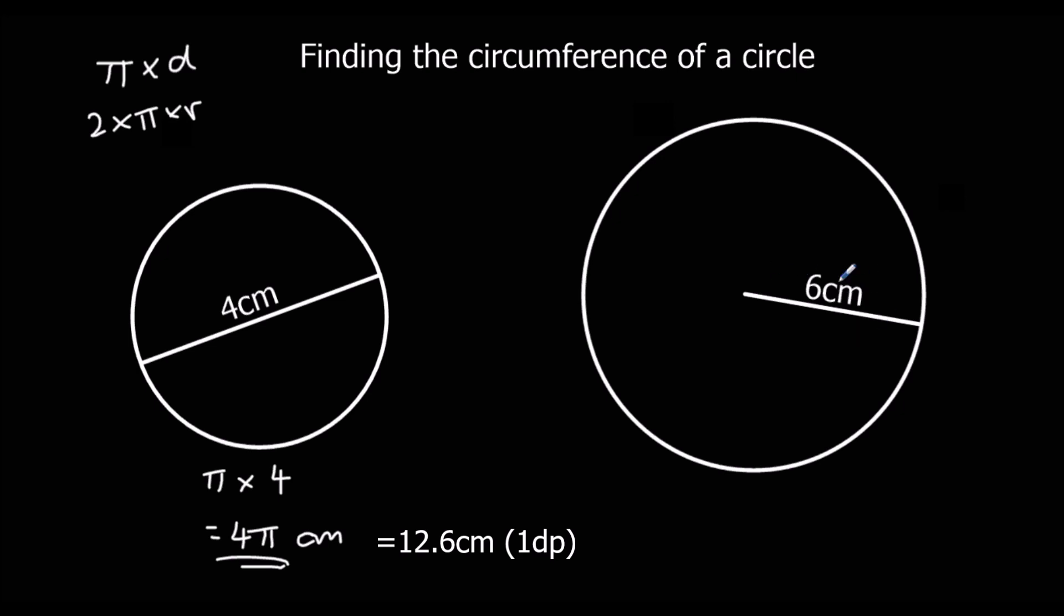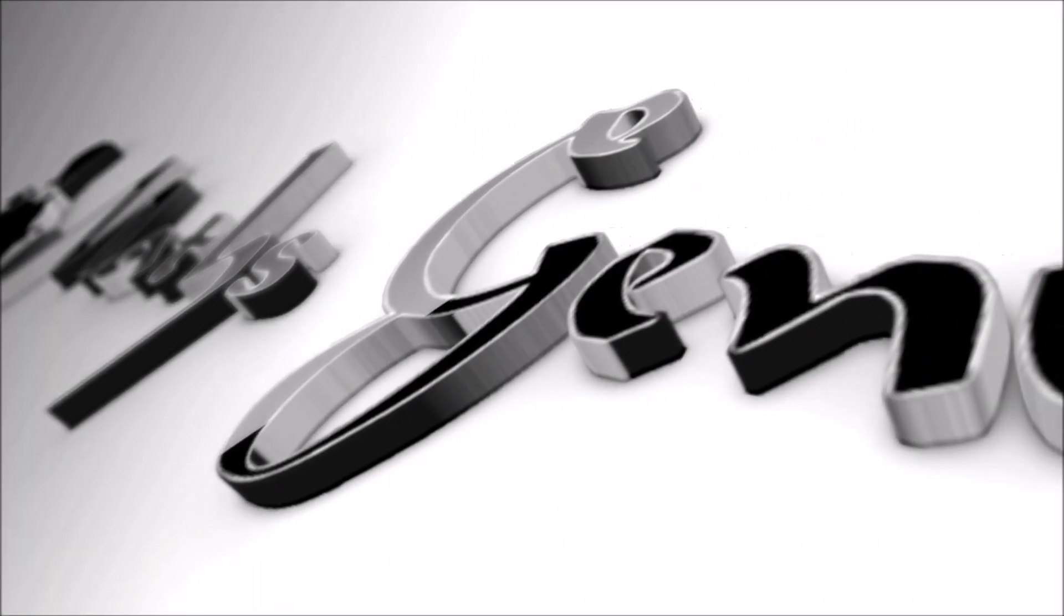In this case, we've got 6 centimeters as a radius. So we could do 2 times pi times 6. Or we could find the diameter by doubling this, which is 12 centimeters. And we can do pi times 12, which again is 12 pi. Or if you press the SD button on the calculator, you'll find out what that is as a decimal. We can do it now.